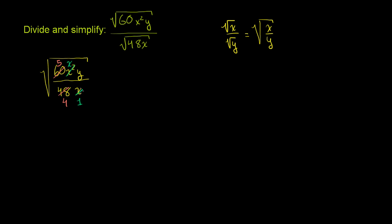So if we wanted to simplify this, this becomes, this is equal to, make a radical sign, and then we have 5/4, and we have nothing left in the denominator other than that 4. And in the numerator we have an x and we have a y.